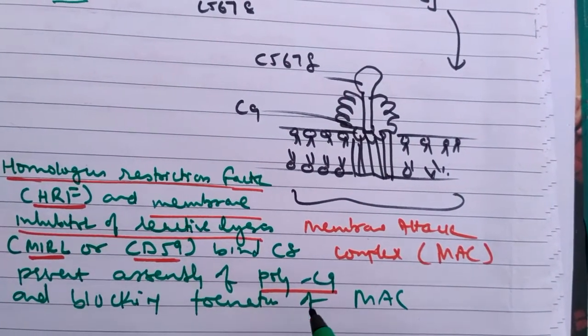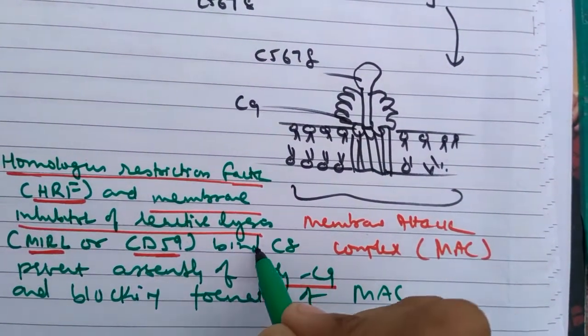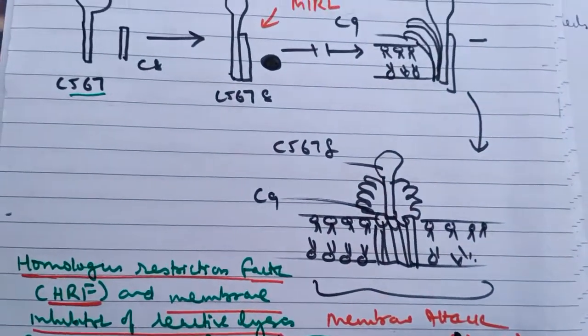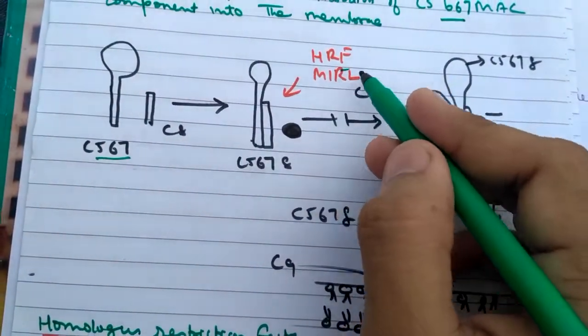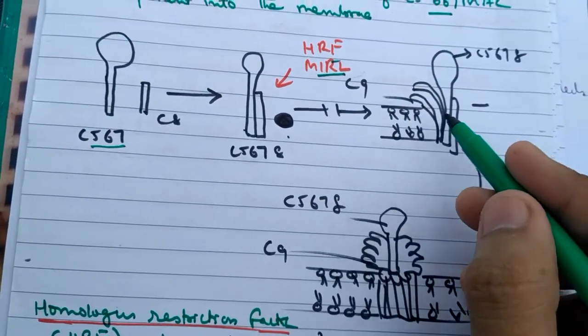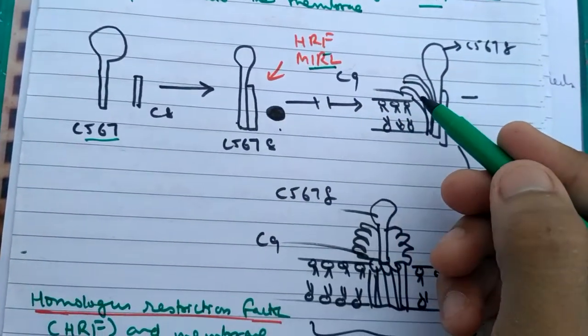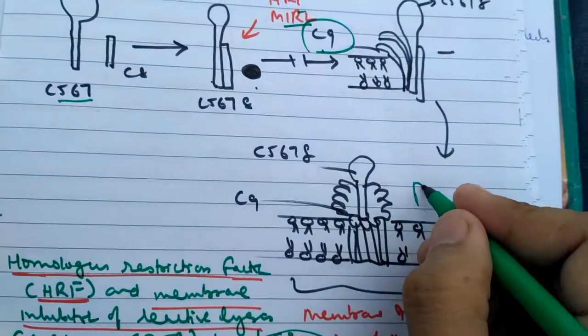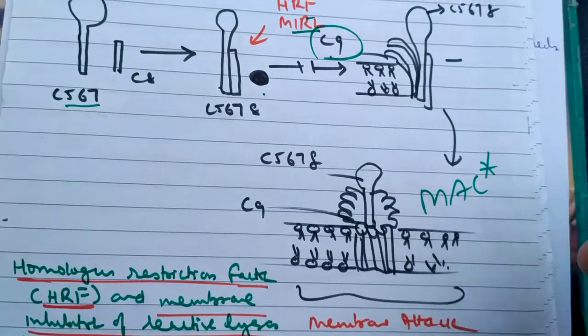Here HRF and MIRL bind with C8, and binding there is inhibited with C9, and the proper formation of MAC is inhibited here.